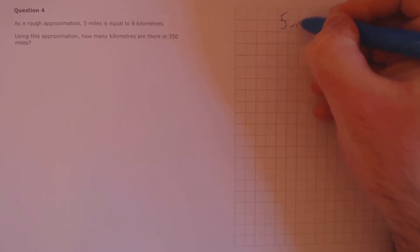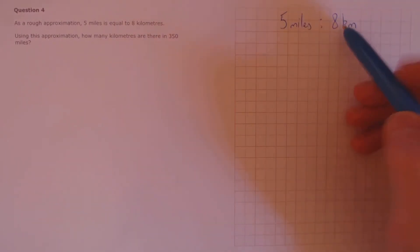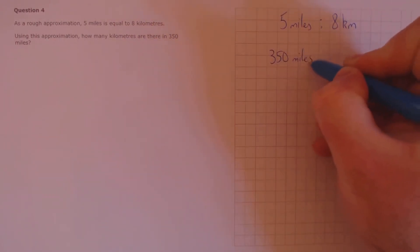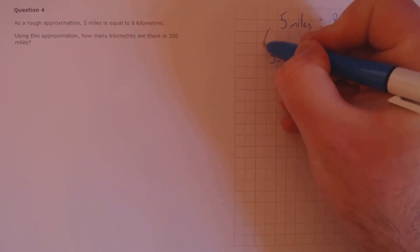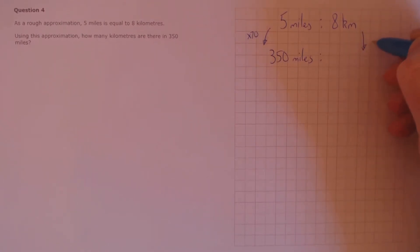Question 4. As a rough approximation, 5 miles is equal to 8 kilometres. Using this approximation, how many kilometres are there in 350 miles? We have the ratio here of 5 miles to 8 kilometres, and we want the ratio of 350 miles to whatever that is in kilometres. We notice here that the ratio on this side has been multiplied by 70. 5 times 70 has to be 350, so that means we should do the same to the other side to keep the equivalent. 8 times 70 must be 560 kilometres.